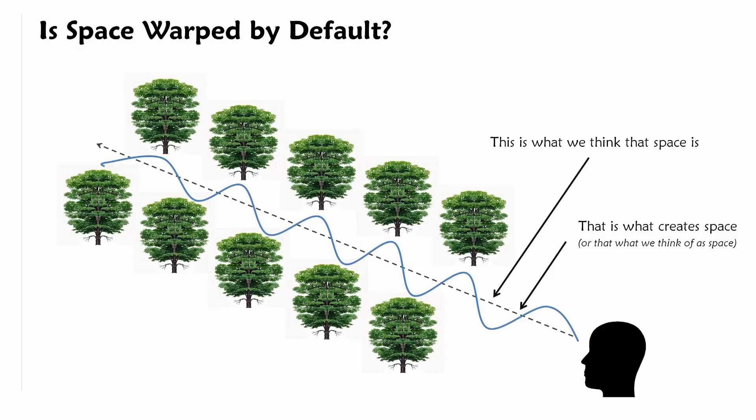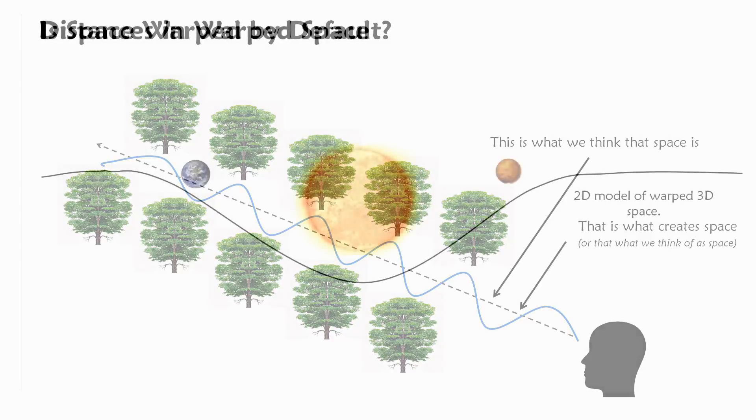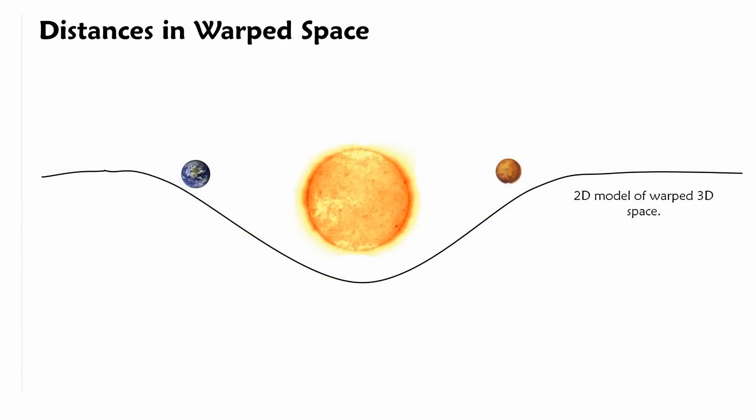The same question applies to our method of measuring distances. Looking at our solar system, we measure by going on the straight line, although we know that the underlying space is warped here by the sun's gravity.